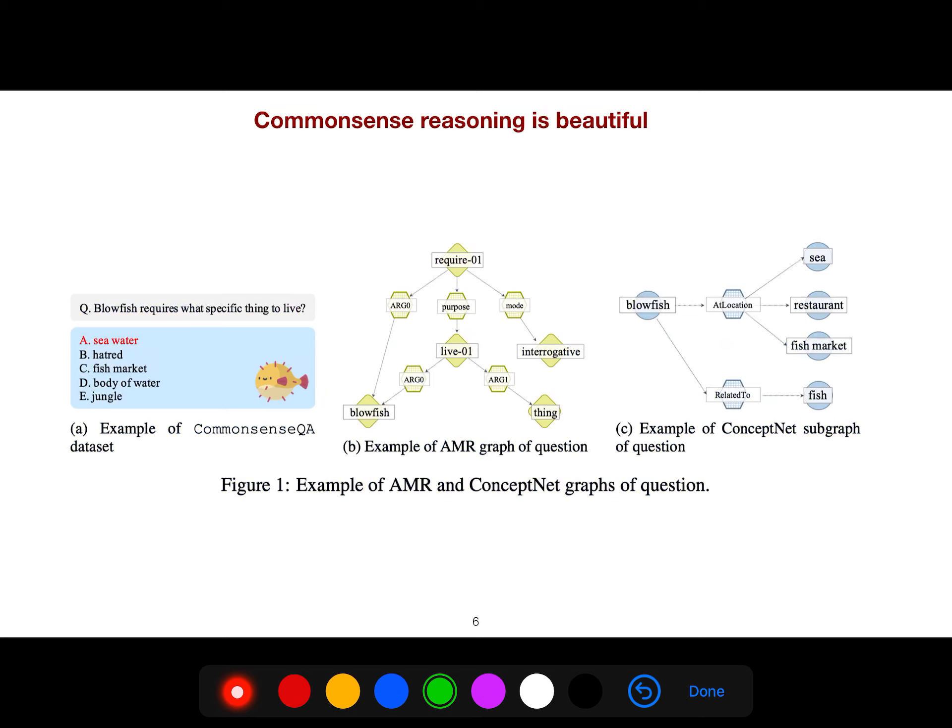This is an example of AMR and ConceptNet graphs of questions. For example, when we say blowfish requires, blowfish is the subject so it has arc zero relation. And we also know that we can use the ConceptNet and just find the blowfish. Blowfish is here.